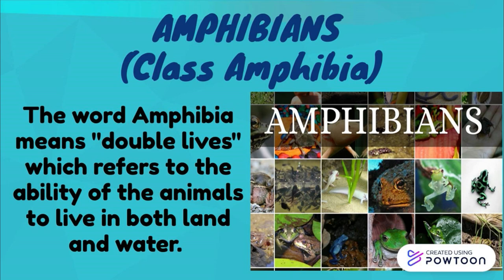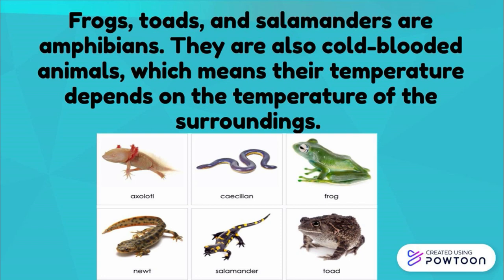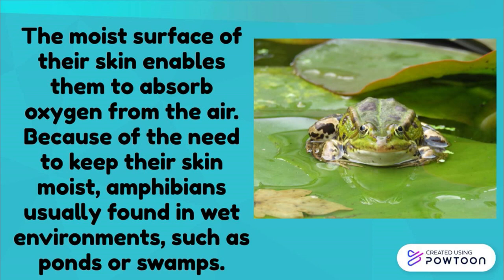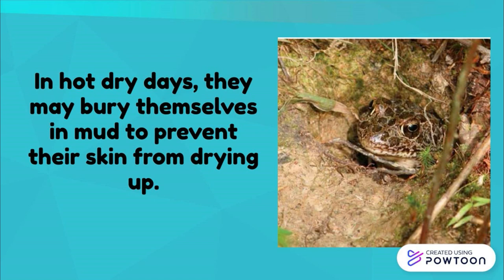Amphibians are class Amphibia. The word 'amphibia' means double lives, referring to the ability of these animals to live in both land and water. Frogs, toads, and salamanders are amphibians. They are cold-blooded animals and feed on insects, worms, and other animals. They have legs instead of fins, as well as lungs for breathing air. The moist surface of their skin enables them to absorb oxygen from the air. Because of the need to keep their skin moist, amphibians are usually found in wet environments such as ponds or swamps. In hot, dry days, they may bury themselves in mud to prevent their skin from drying up.